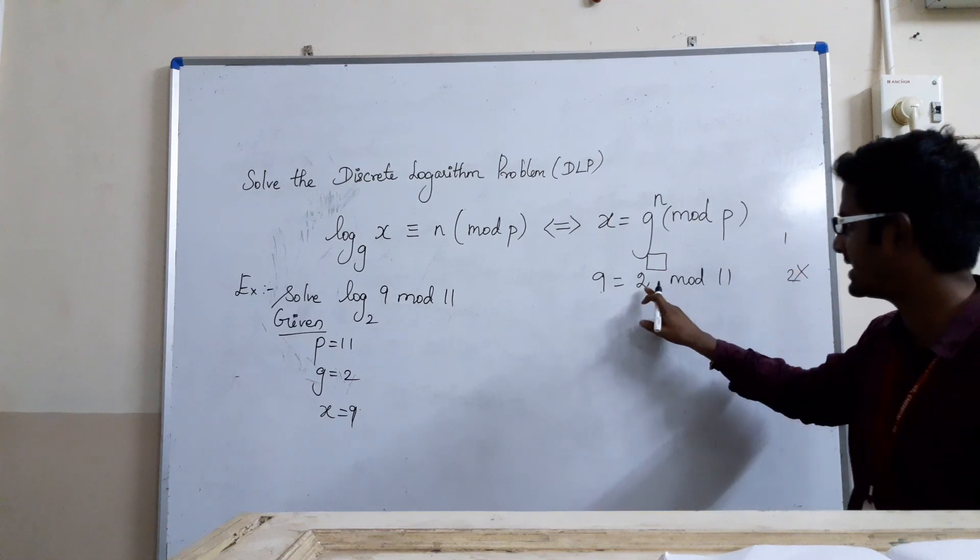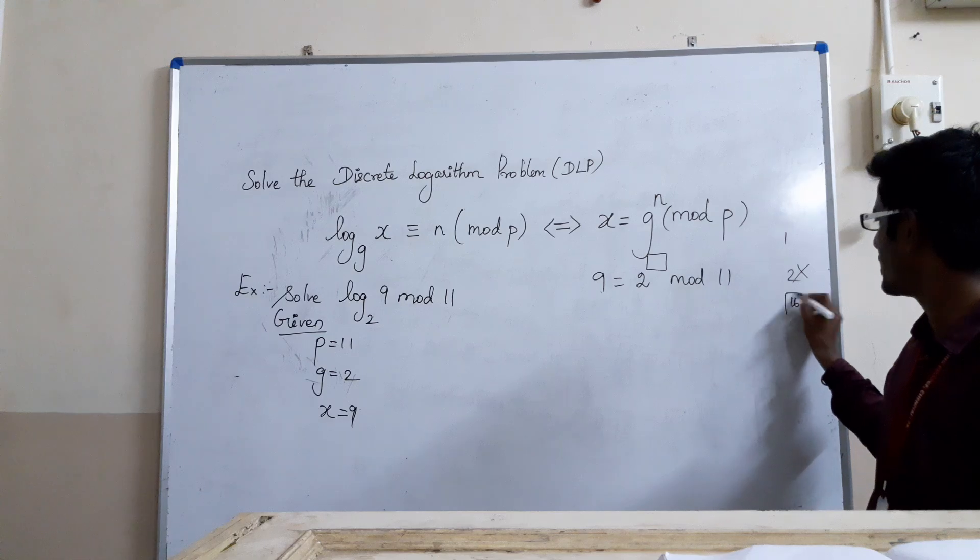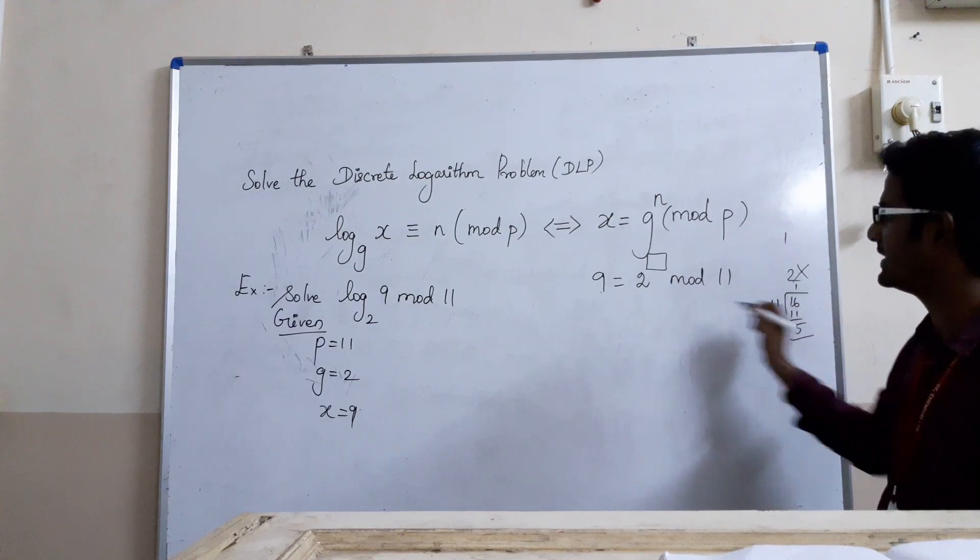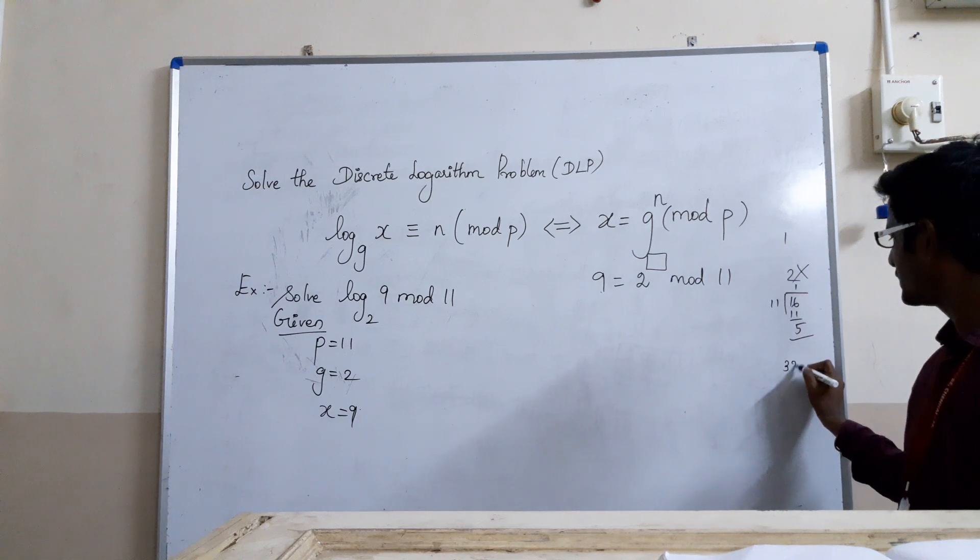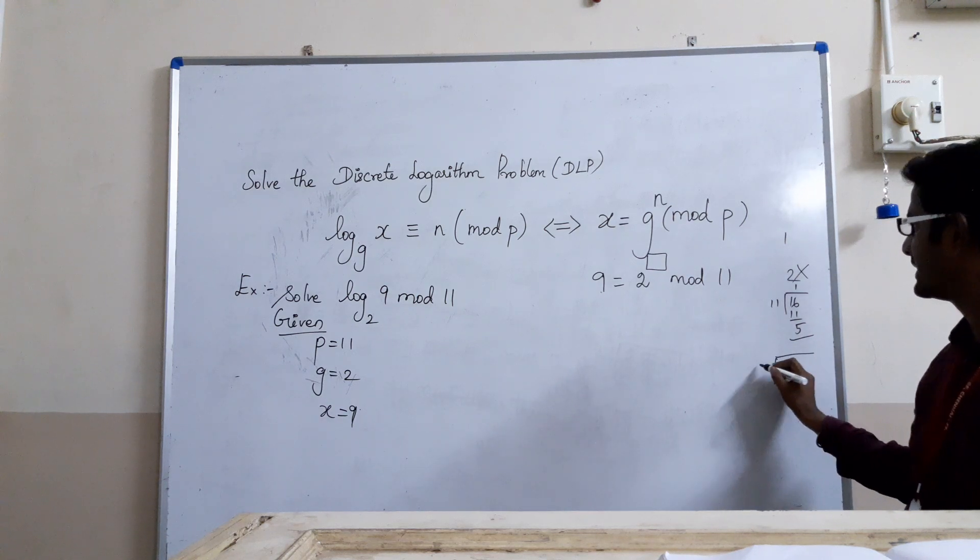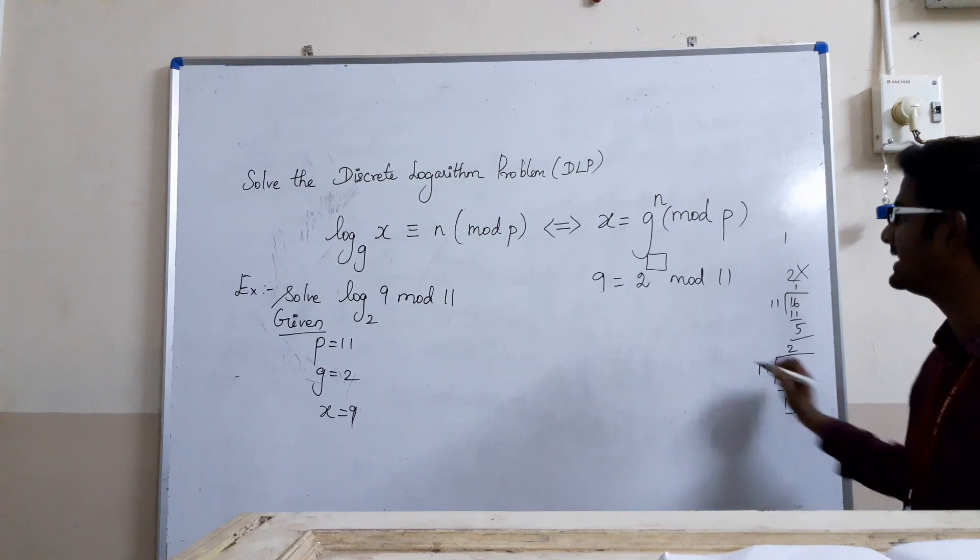2^4 = 16. 16 mod 11... 11 times 1 is 11, remainder is 5. No, we want 9. 2^5 = 32. 32 divided by 11... 11 times 2 is 22, remainder is 10. No, we need 9.